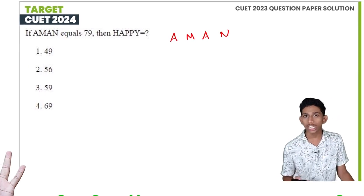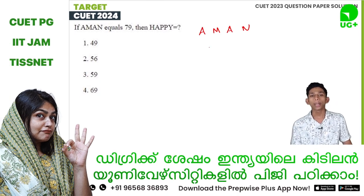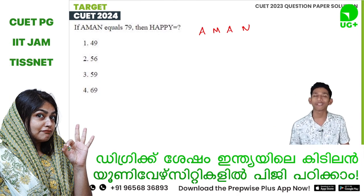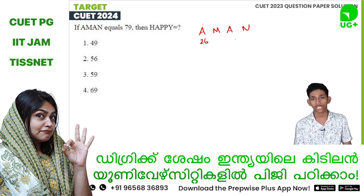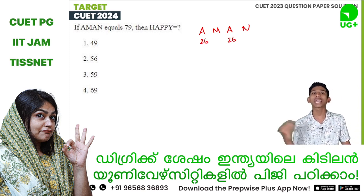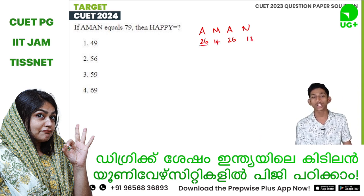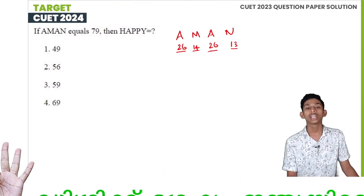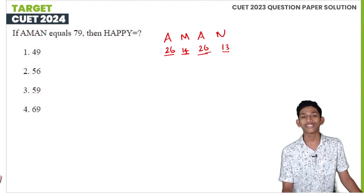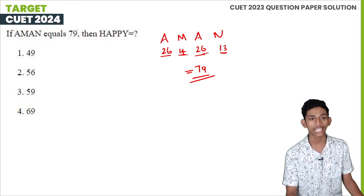We can't use the normal numerical value directly. We need to assign positional values to the letters and work backwards. The letters are assigned values based on their position. For Aman: A is 1, M is 13, A is 1, N is 14. Adding them: 1+13+1+14 gives us the coded value. For Happy: H is 8, A is 1, P is 16, P is 16, Y is 25. The total comes to 66, then adjusting gives 69.